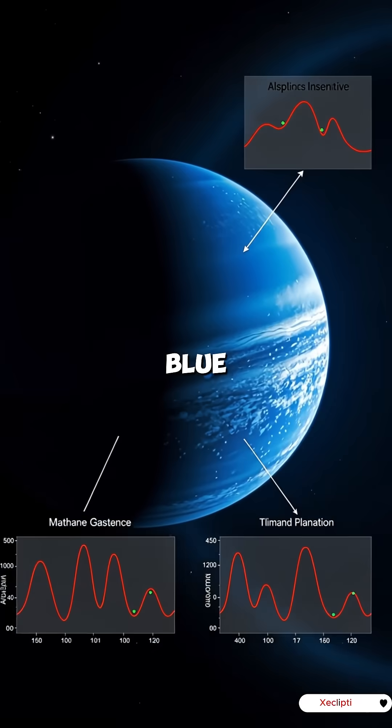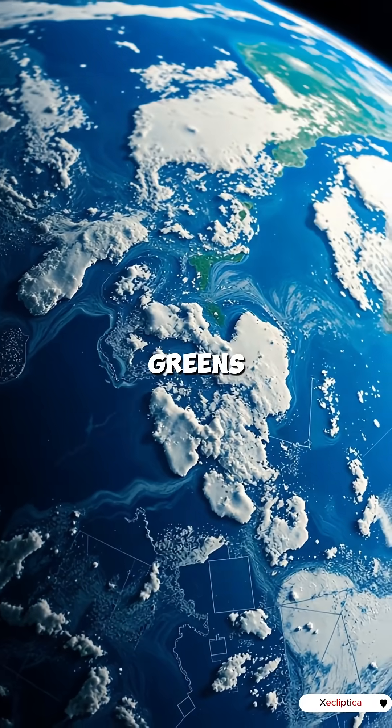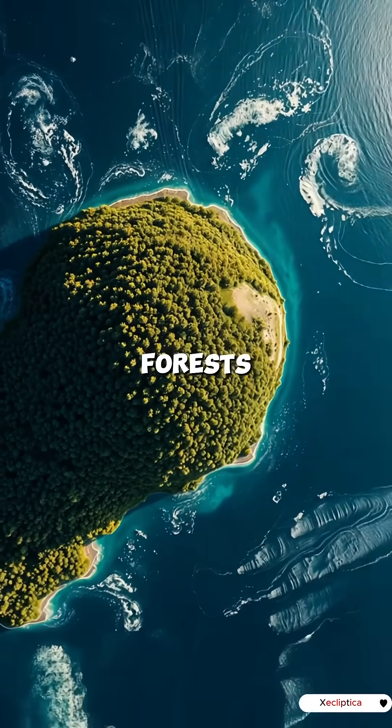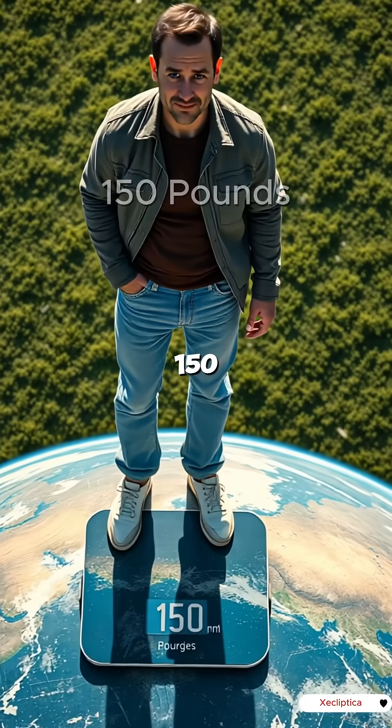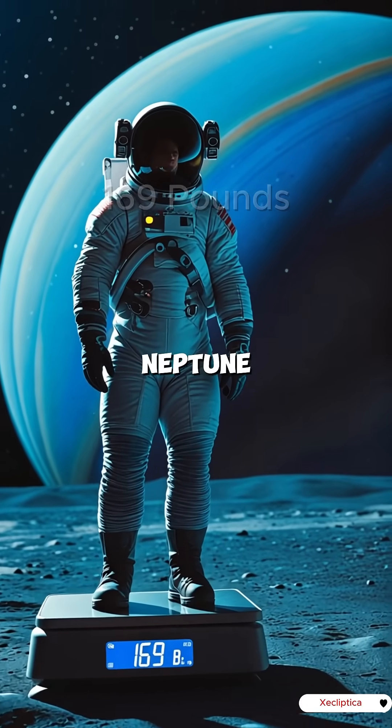Neptune's deep blue appearance comes from methane gas that absorbs red light, while Earth's vibrant blues and greens showcase our oceans and forests. The gravity difference: if you weigh 150 pounds on Earth, you'd feel like 169 pounds on Neptune.